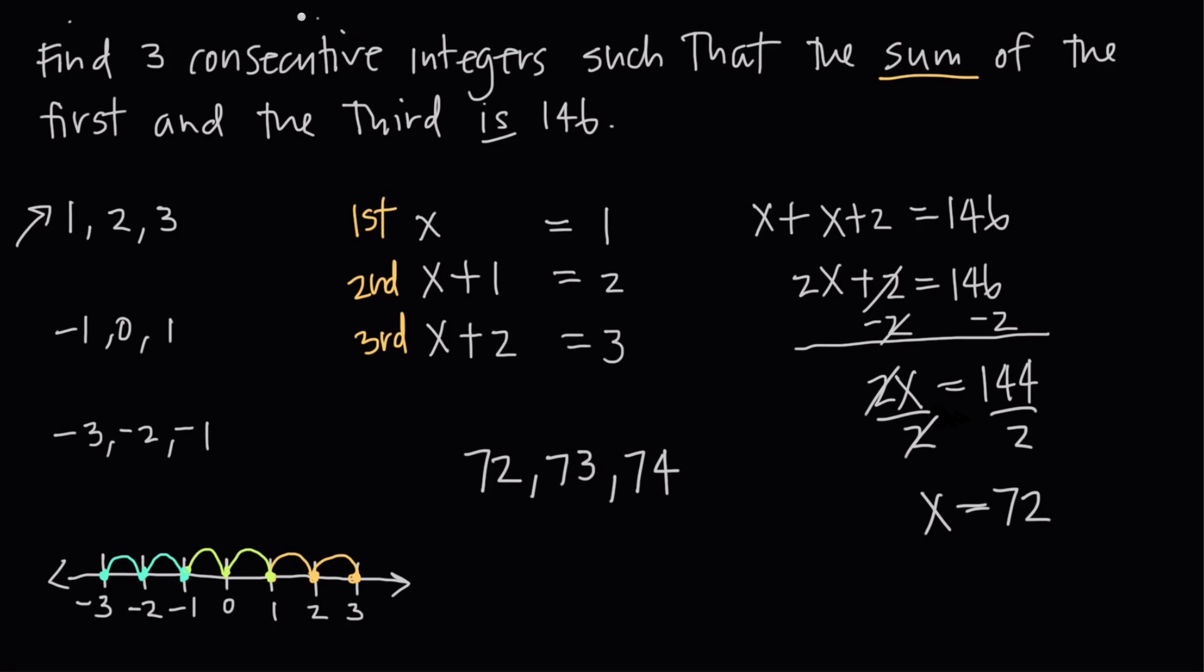These are going to be our three consecutive integers. We know that they're consecutive because we can see 72, 73, 74. And we know that the sum of the first and the third is 146 because we can take 72 and 74 and add them together: 2 plus 4 is 6, 7 plus 7 is 14, so we get 146. We double check ourselves that way, that the sum of the first term and the third term is 146.